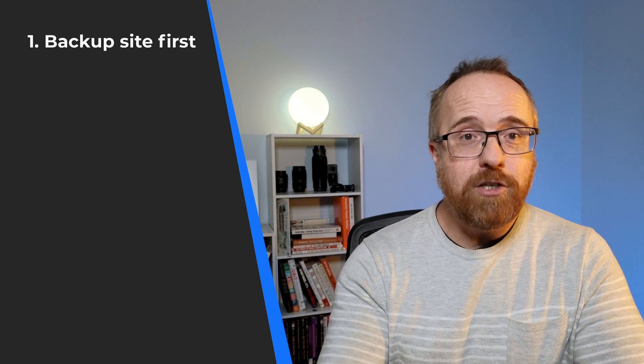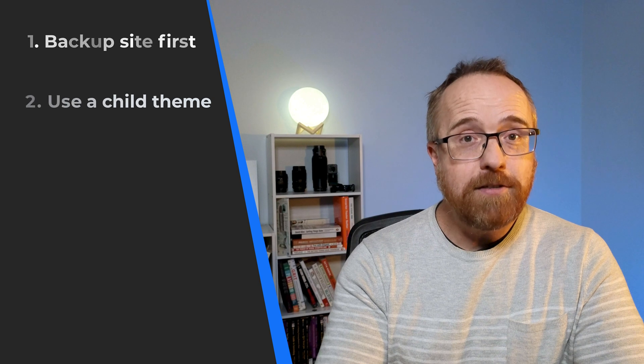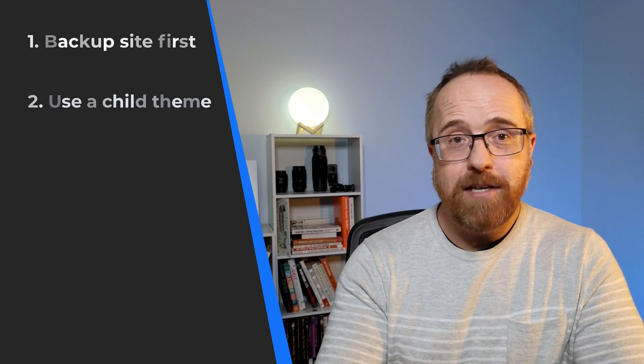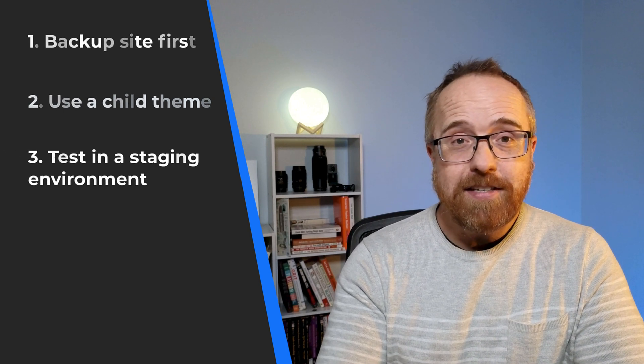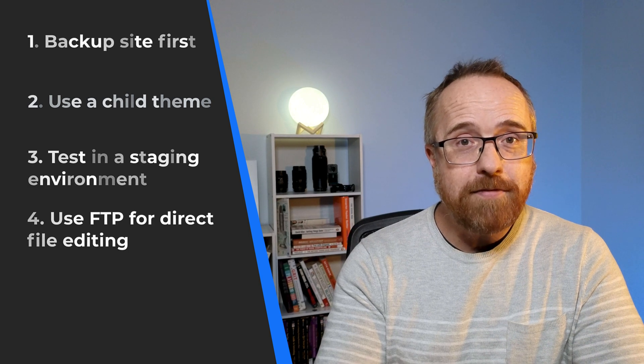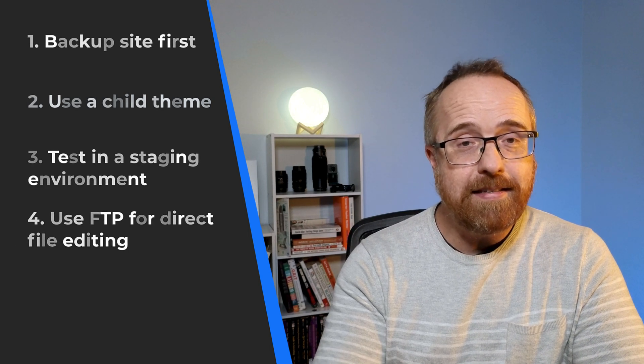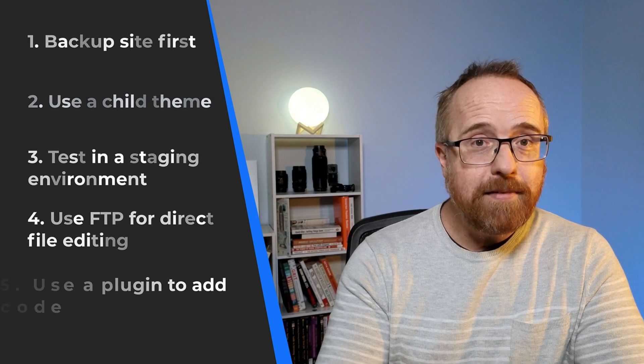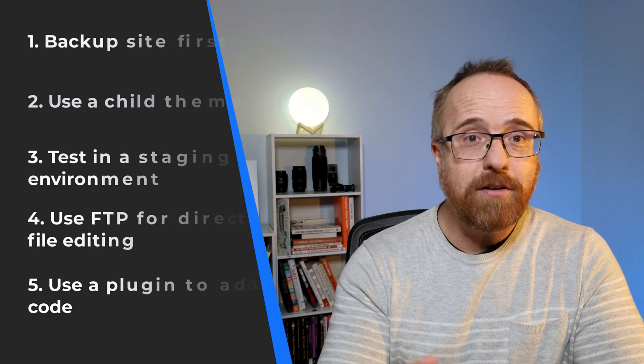Here are some best practices for editing WordPress code. First, always back up your site before making changes. Second, use a child theme for theme modifications. Third, test changes in a staging environment first. Fourth, use FTP for direct file edits instead of the theme editor. And finally, consider using plugins instead of direct code edits. If you follow these steps, you'll be able to customize your site safely without breaking anything — hopefully.